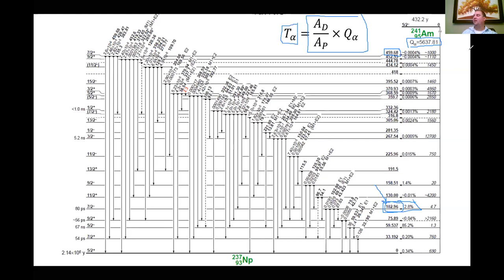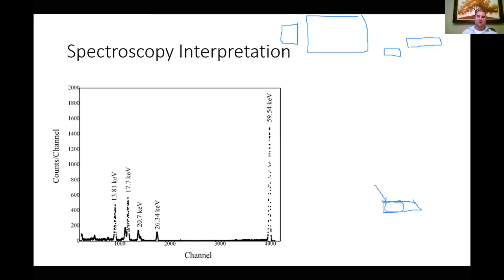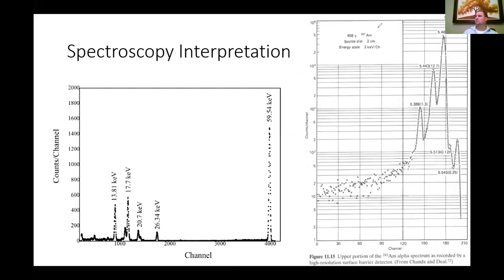We can determine what energy we would observe for alpha particle. Notice that the 5637.8, if we subtract about 103 from that, that would give us about 5534.8. And if you look on the alpha spectrum, then you do not actually see an alpha particle at 5534 keV.